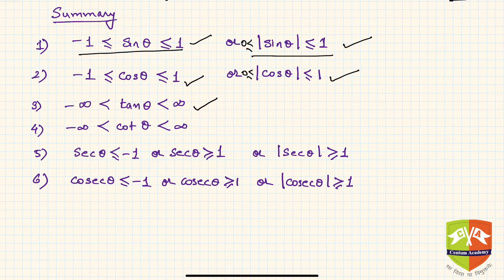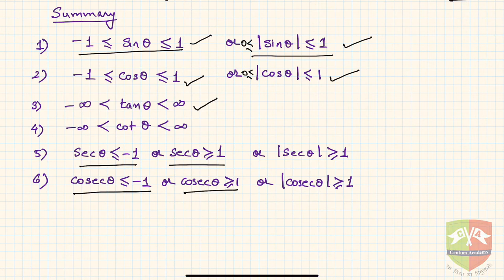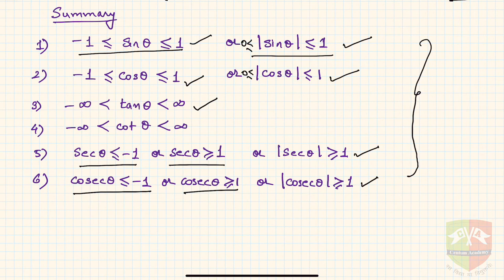Similarly, −∞ < cotθ < +∞. For secant: secθ ≤ −1 or secθ ≥ 1. For cosecant: cosecθ ≤ −1 or cosecθ ≥ 1. Hope you understood — this information is very vital. We'll also have a demonstration video showing how the graphs of all six trigonometric ratios behave with respect to the angle. You can check that out on the same channel.